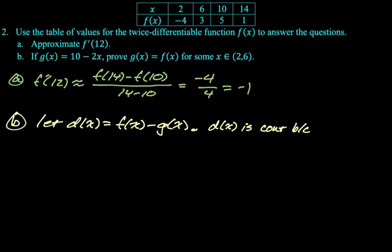So I need to show that d of x is continuous. d of x is continuous because g of x is a polynomial, right? So that's just 10 minus 2x, that's definitely continuous. So I'm going to say g of x is continuous. f of x is twice differentiable, therefore differentiable. Differentiability implies continuity. So I'm going to say f is differentiable, which implies continuous.